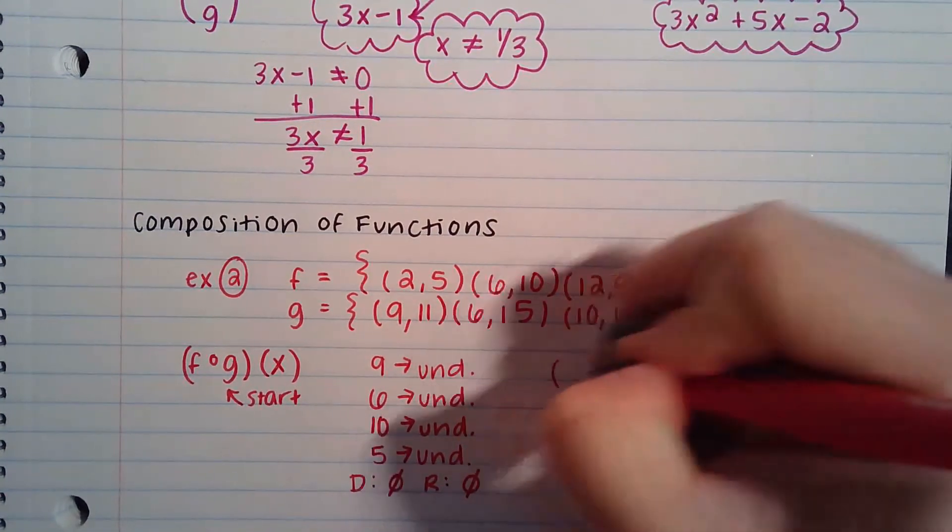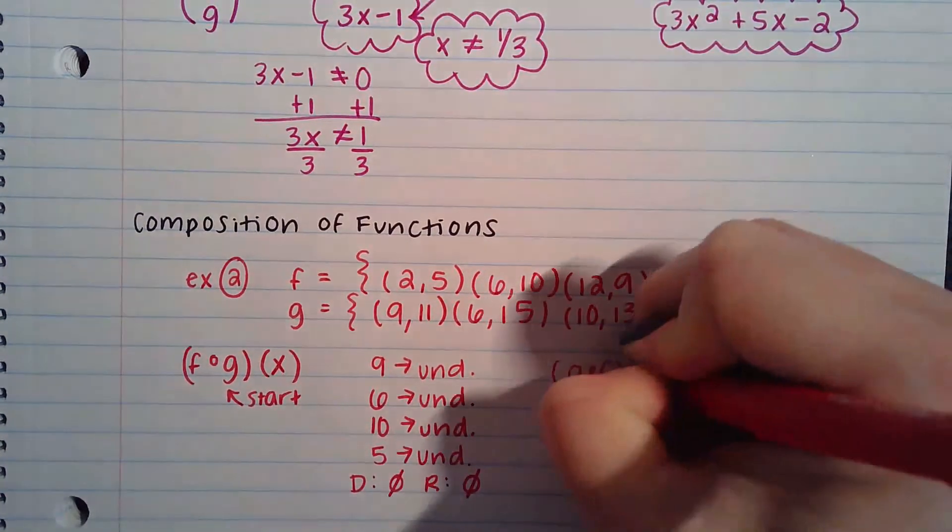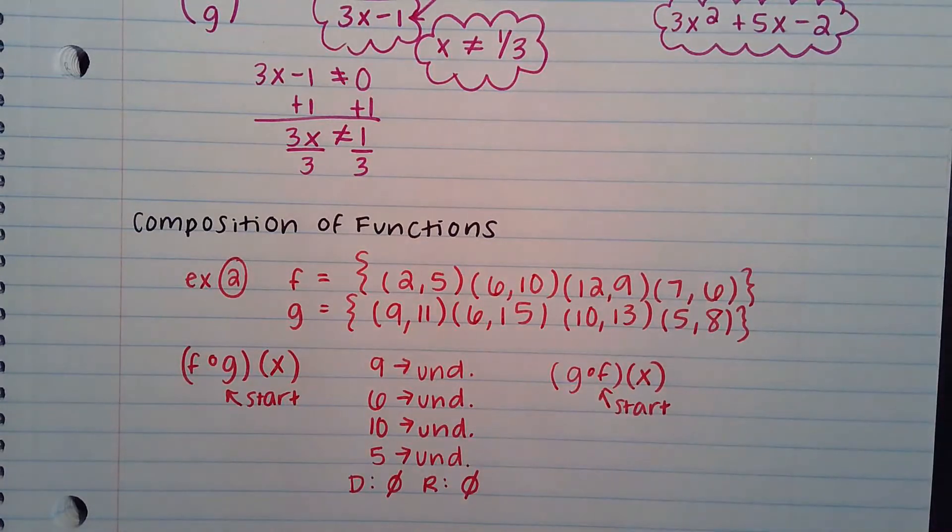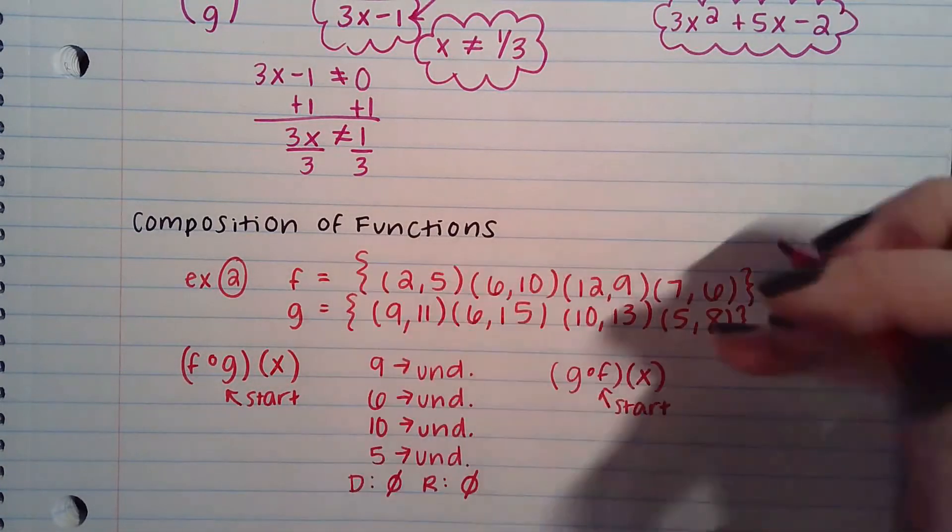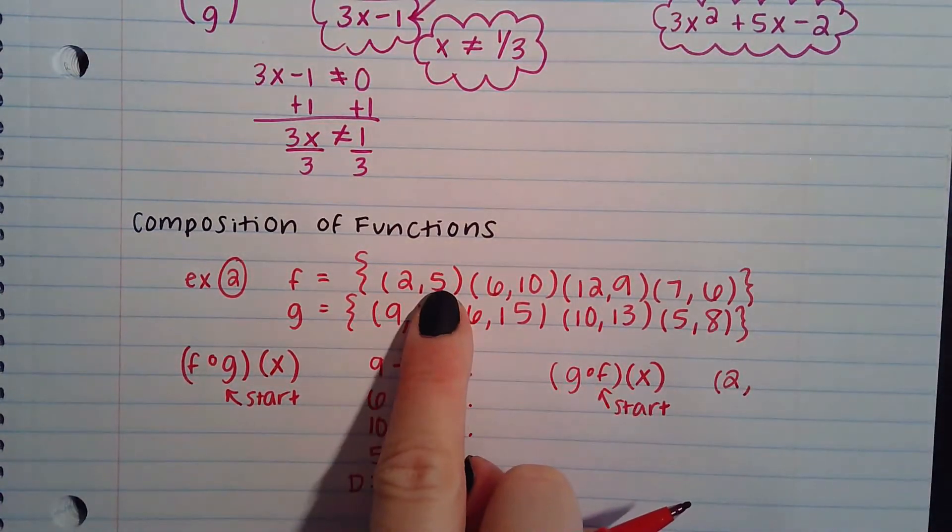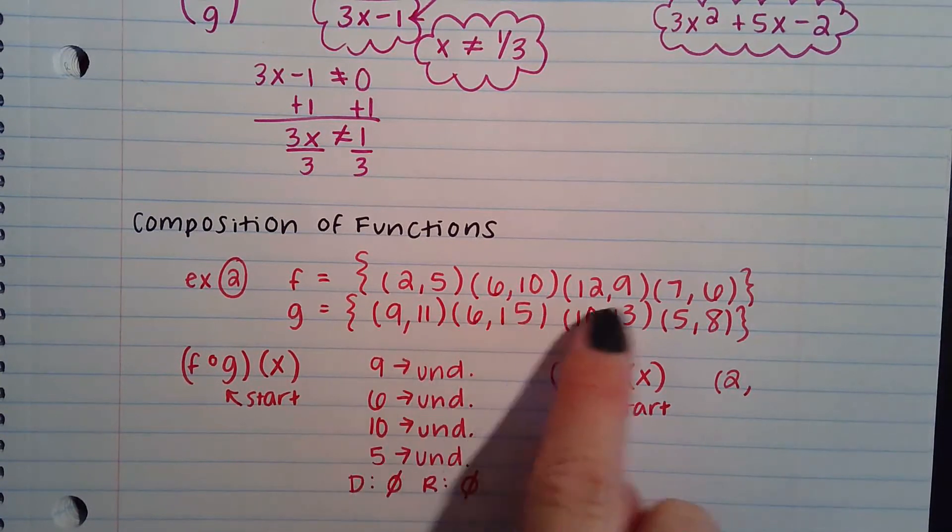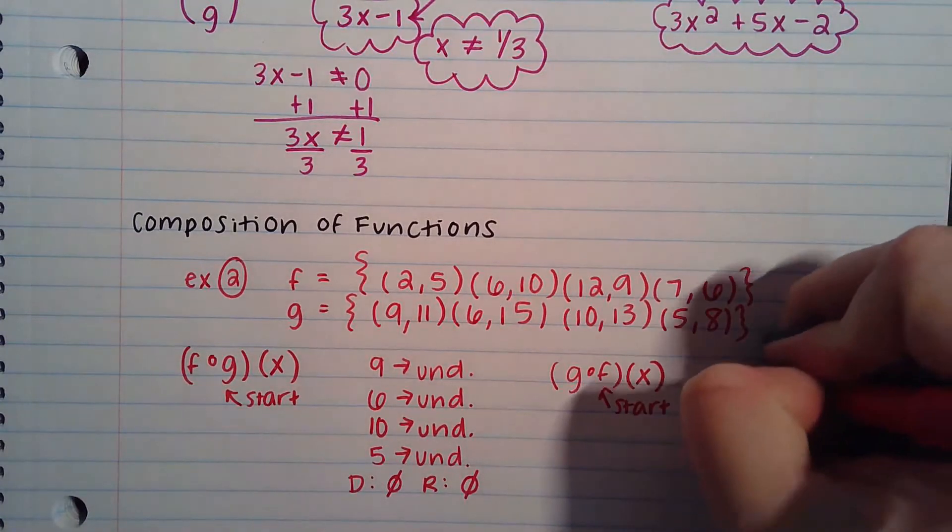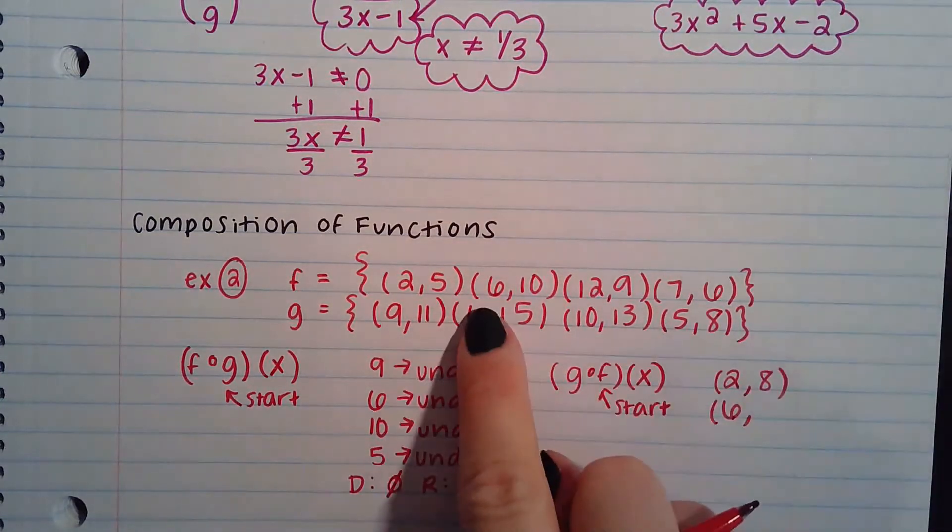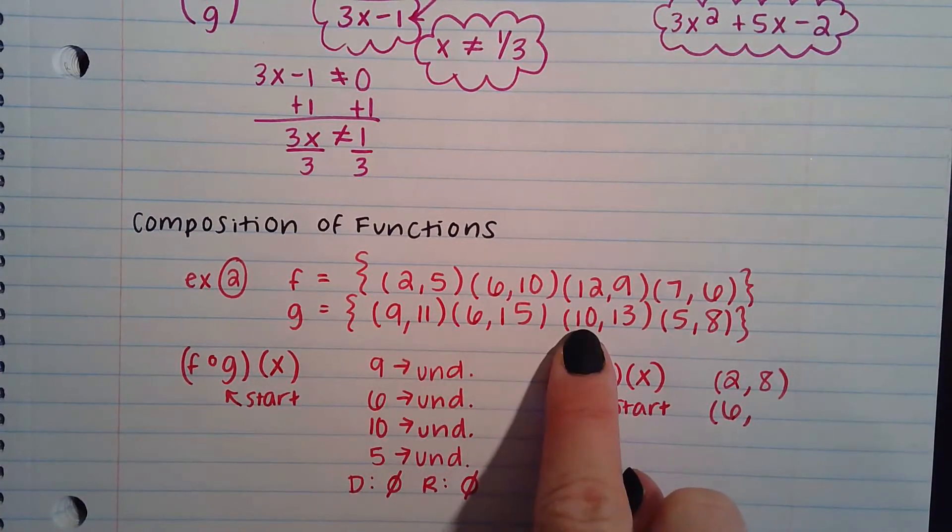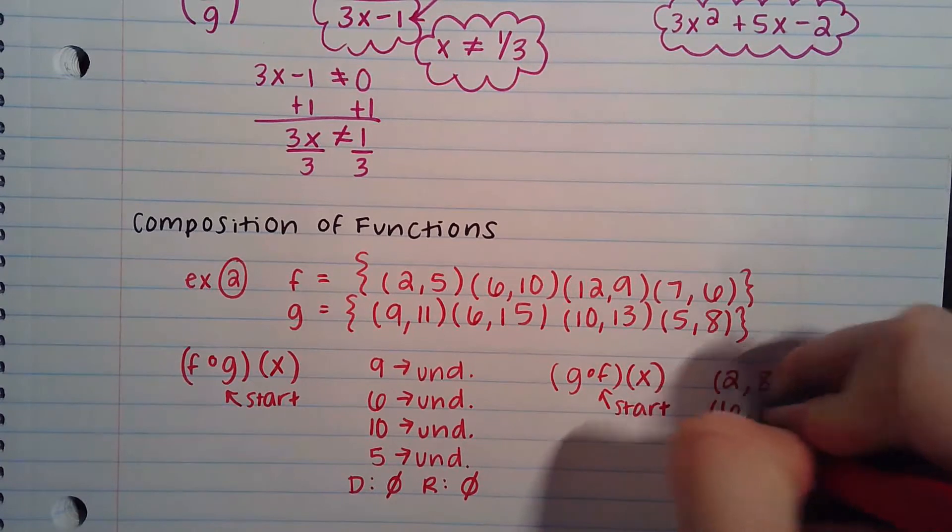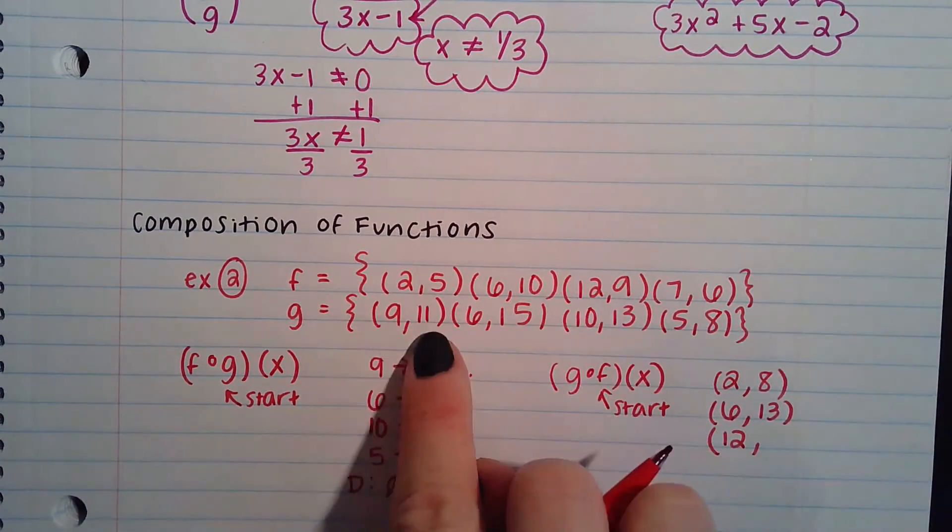We need to go backwards though. We also need to do g∘f(x). This means now we're going to start with the f values and we're going to end with the g values. So let's start with f at 2. Move to this number. Find it here. I see it right here, which means the first point is at (2,8). The next one we would start with is 6. x goes with 10. 10 is right here. This matches up with 13. Next one is 12. 12 with 9. 9 with 11.